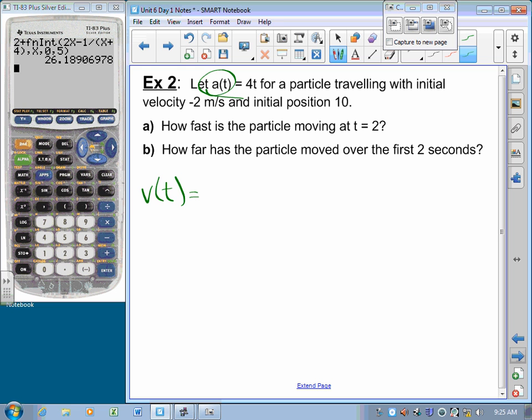Well, velocity is the thing whose derivative is acceleration, so velocity is the anti-derivative of acceleration. That's 2t squared plus a constant. And I need to put that constant in place such that the initial velocity is negative 2. Well, if I were to sub in 0 for time here, I'd get 0 out, so it must be that that constant is minus 2.